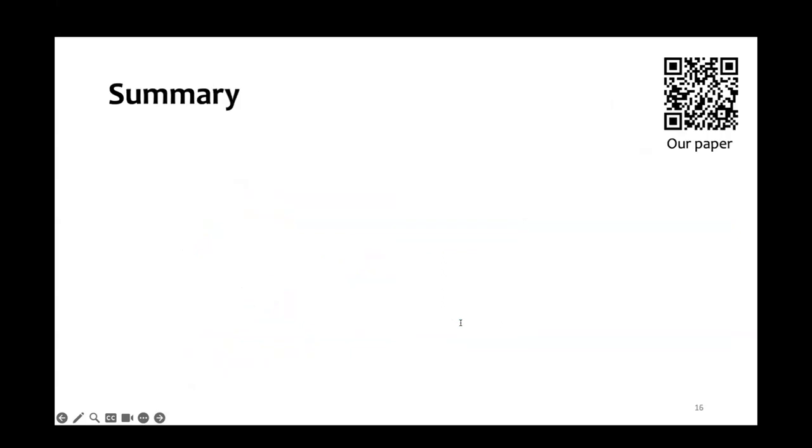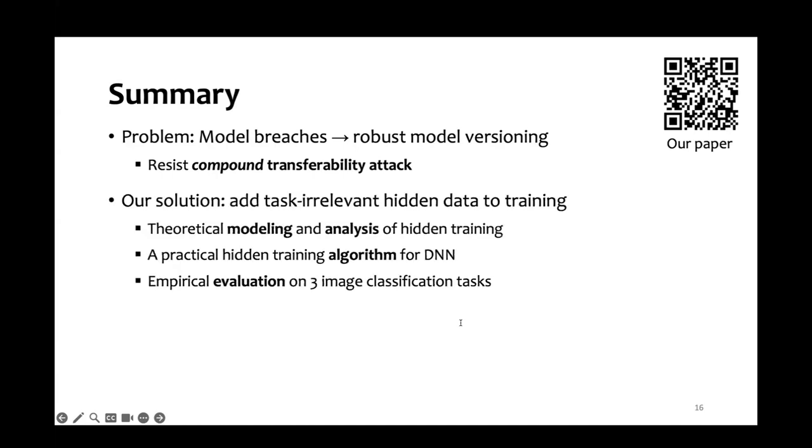In summary, we identified the problem of model breaches and the need for robust model versioning against compound transferability attacks. Our solution, hidden training, adds task-irrelevant hidden data to the model training data. We theoretically model and analyze hidden training. We also propose a practical algorithm for DNN models. And we evaluate our algorithm on three image classification tasks.